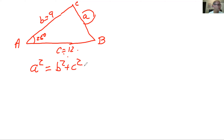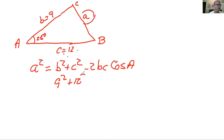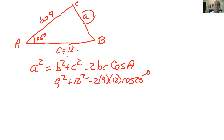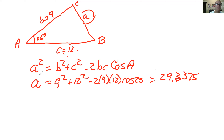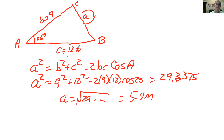Looking at the list of equations, we'd use: A squared equals B squared plus C squared minus 2BC cosine of A. So with a lot of numbers to plug in — but not too hard — this would be nine squared plus 12 squared minus two times nine times 12 times cosine of 25 degrees. If you get out your calculator and do that, you get 29.32375, and remember that is A squared. Length is always positive, so taking the square root gives you 5.4 meters.